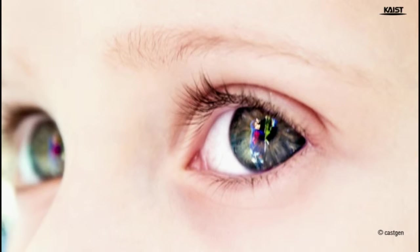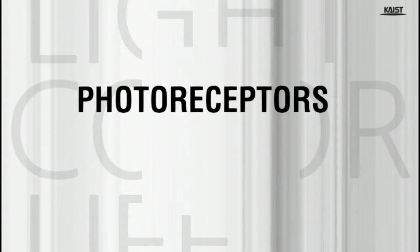This little girl seems to look at a person in a blue shirt. The reflected light from the blue shirt entered through her pupil and reaches the retina where the photoreceptors are stimulated. Depending on how the photoreceptors transform the light into signal information, we are able to see colors.